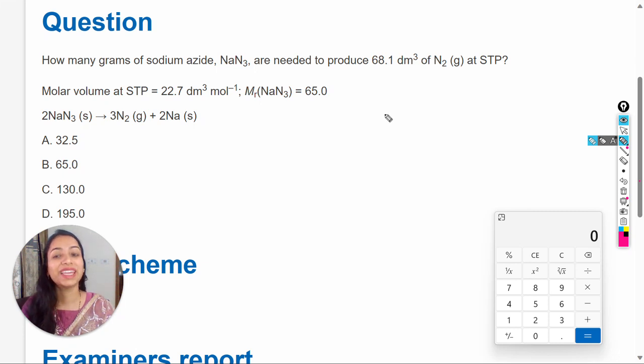Hello dear students, in this video we are going to solve this question. How many grams of sodium azide, NaN3, are needed to produce 68.1 dm³ of nitrogen gas at STP? STP means standard temperature and pressure conditions. The molar volume at STP and molar mass of NaN3 are given, and the chemical equation shows that 2 moles of NaN3 produce 3 moles of N2 gas.